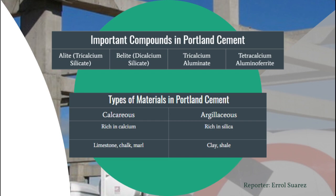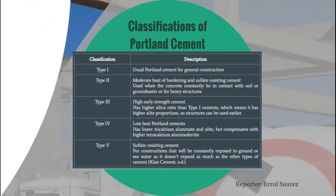Calcareous materials provide calcium, like limestone, chalk, and marl. Argillaceous materials provide silica, like clay and shale. Portland cement is classified based on adherence to prescribed concentrations. Type 1 is used for general construction. Type 2 is for concrete constantly in contact with soil or groundwater and heavy structures. Type 3 has high early strength due to higher alite proportions, so structures can be used earlier. Type 4 is a low-heat Portland cement due to lower tricalcium aluminate and alite proportions. Type 5 is the least expansive, used for constructions constantly exposed to ground or seawater.